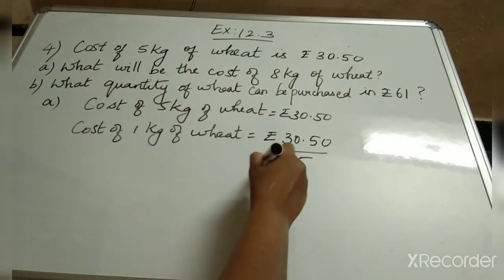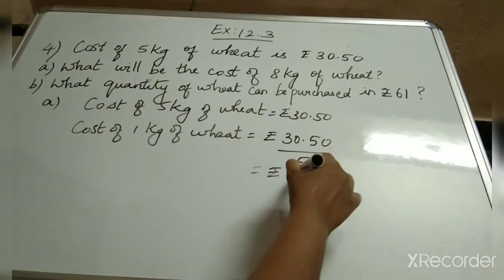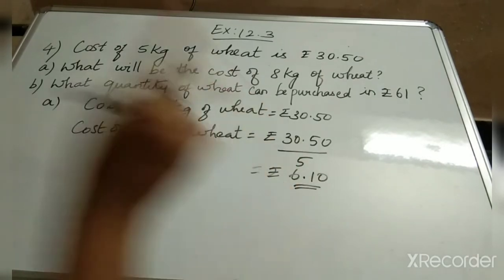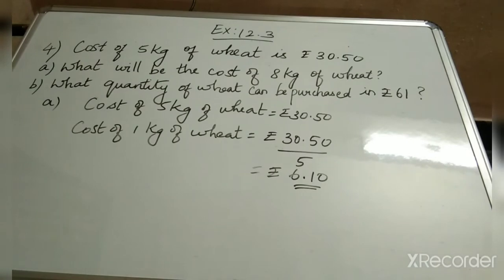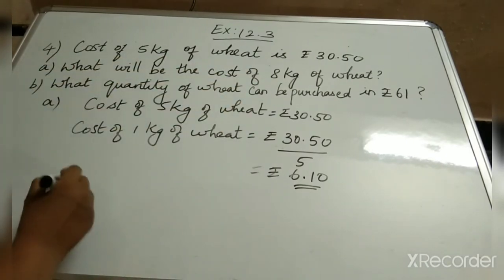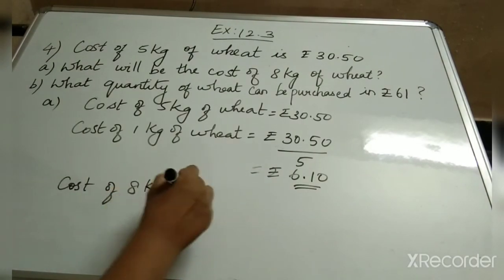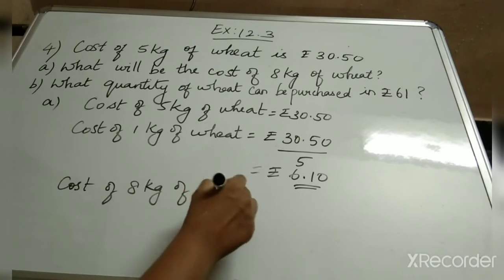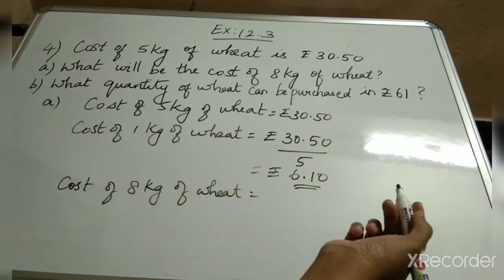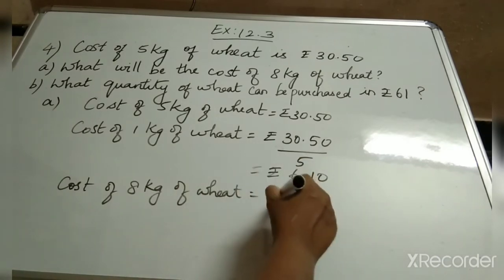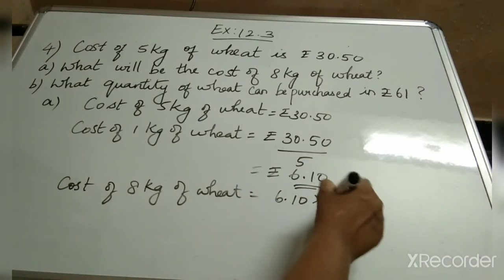Our answer is rupees 6.10. This is the cost of 1 kilogram of wheat. Now our question is what will be the cost of 8 kilograms of wheat? So we have to find the cost of 8 kilograms of wheat. We have to multiply 6.10 into 8.